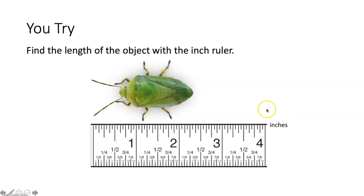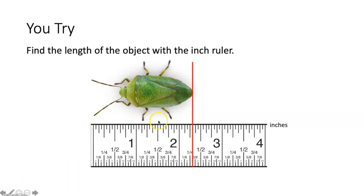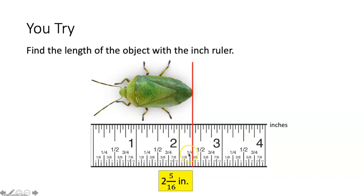Now we're going to measure the length of this bug with an inch ruler. Inch rulers are broken up into sixteenths of an inch, which is different from metric. We start at the beginning of the antennae at zero and go to the end of the thorax. We count one, two full inches, then one-sixteenth, two-sixteenths, three-sixteenths, four-sixteenths, five-sixteenths. So the answer is two and five-sixteenths inches. Note: two-sixteenths would simplify to one-eighth, and four-sixteenths to one-fourth, but five-sixteenths doesn't simplify further.